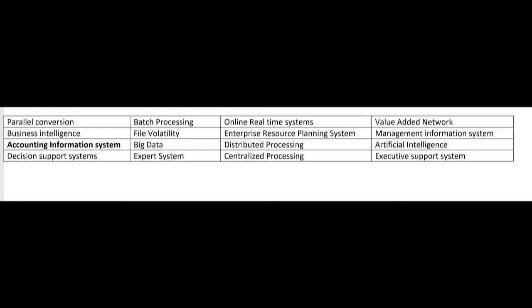On the exam, you need to know that an AIS is best suited to solve problems when reporting requirements are structured and well defined. By structured and well defined, we mean if something gets processed the same way every time, then an AIS would be very useful. An accounting information system supports day-to-day operations by collecting and sorting data, and also includes a general ledger and financial reporting system — as you would expect from an accounting information system.